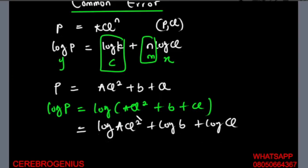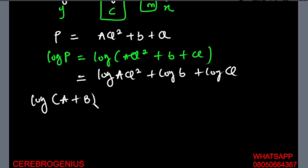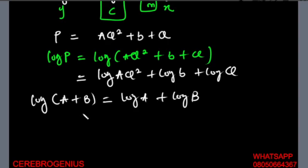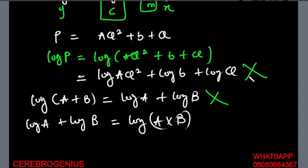You cannot do something like this because you are claiming that the logarithm of an addition is the same thing as the addition of logarithms. You are telling us there is a law in mathematics that says log(a + b) equals log a plus log b. There is no such law. The only law we have is: addition of logarithms means you multiply the numbers inside. There is nowhere in math where you will find log(a + b) = log a + log b.